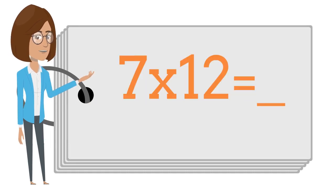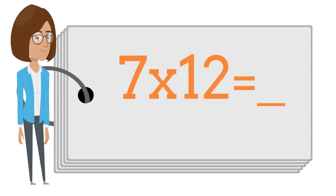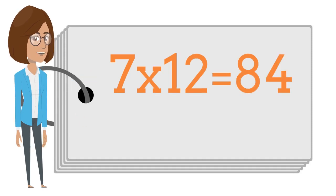7 times 12 is — say the answer out loud. 7 times 12 is 84.